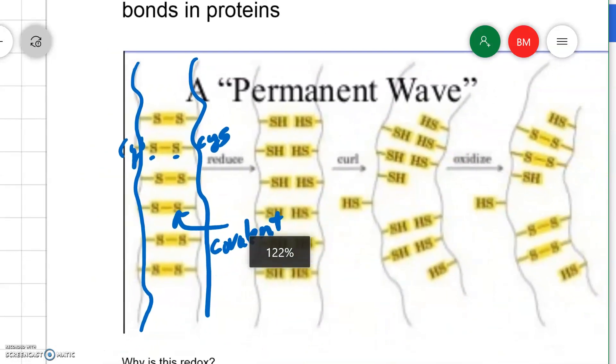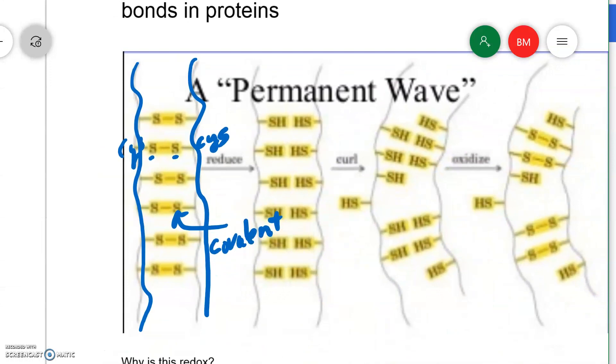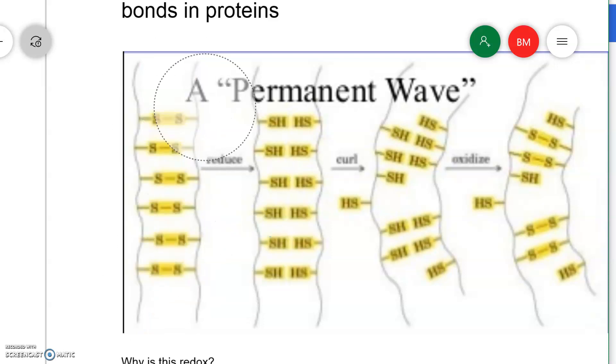So we're going to learn that changing the shape of hair using these disulfide bridges involves redox reactions. You can see here that this diagram is showing us that the reaction used to break these bonds is a reduction reaction. And there's also an oxidation reaction that is used to reform the bonds. We're going to come back to this image in a moment.